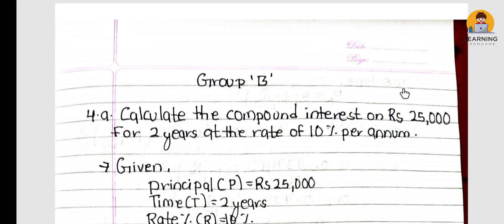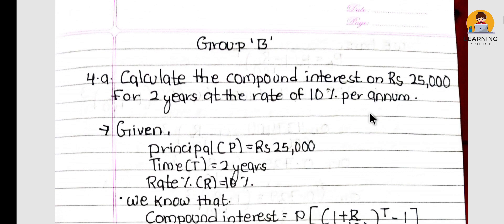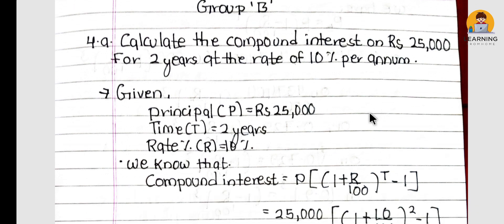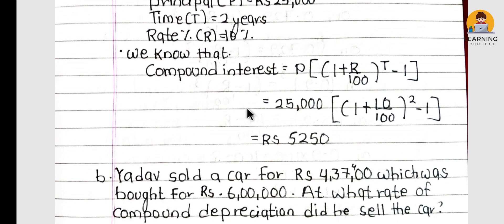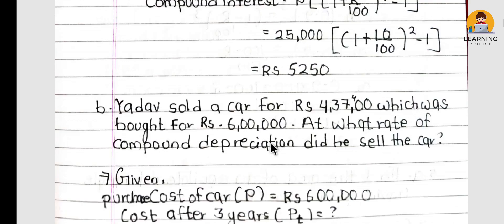Group B question 4(a): Calculate the compound interest on Rs 25,000 for two years at the rate of 10% per annum. Principal is Rs 25,000, time is 2 years, rate is 10%. Using the compound interest formula: CI = P[(1 + R/100)^T − 1]. The answer is Rs 5,250.